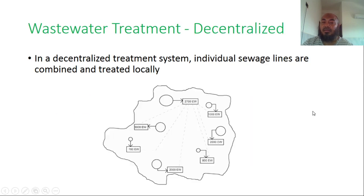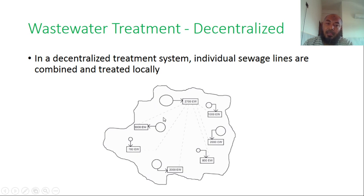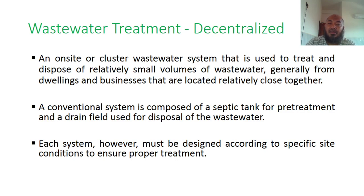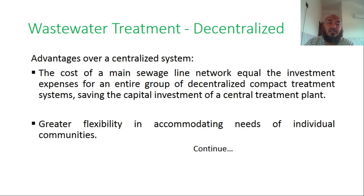In a decentralized system, individual sewage lines are combined and treated locally — on-site or in a cluster wastewater system — used to treat and dispose of relatively small volumes of wastewater generated from dwellings and businesses located relatively close together. A conventional decentralized system is composed of a septic tank for pre-treatment and a drain field for disposal. Each system must be designed according to the specific site conditions to ensure proper treatment.